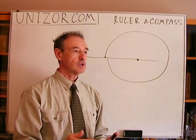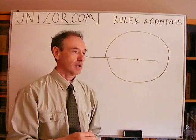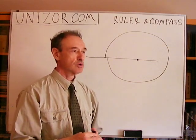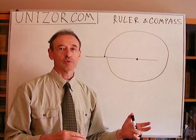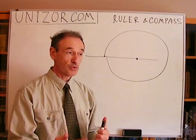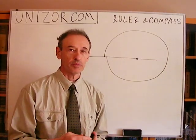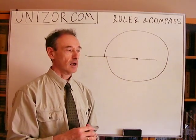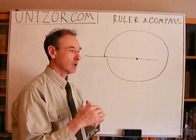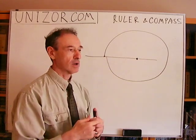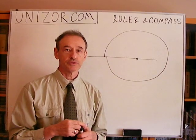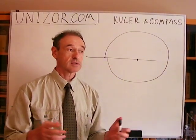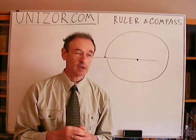Now, why can't we use something else? Well, quite frankly, I don't know, but it's a tradition in geometry to use only these two instruments to prove theorems, to solve problems, to construct certain geometrical figures. And whatever is not constructable or possible to prove using these two instruments is just considered to be outside the scope of geometry.